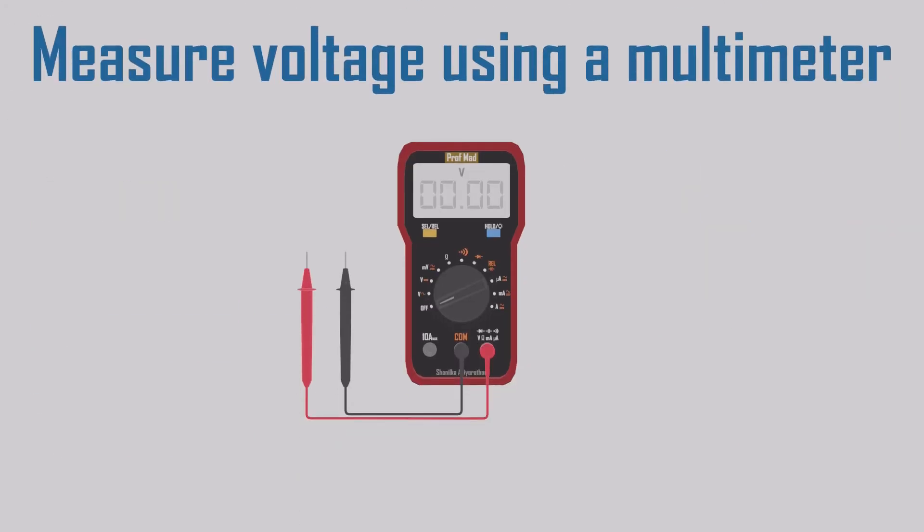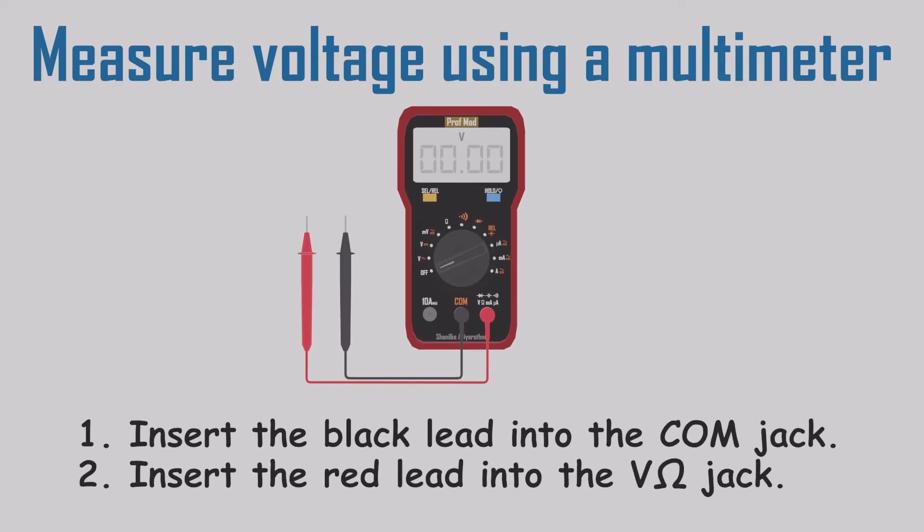Now let's see how we can measure voltage using a multimeter. Keep in mind, we always measure voltage difference between two points. First, insert the black lead into the comm jack. Next, insert the red lead into the volt ohm jack.